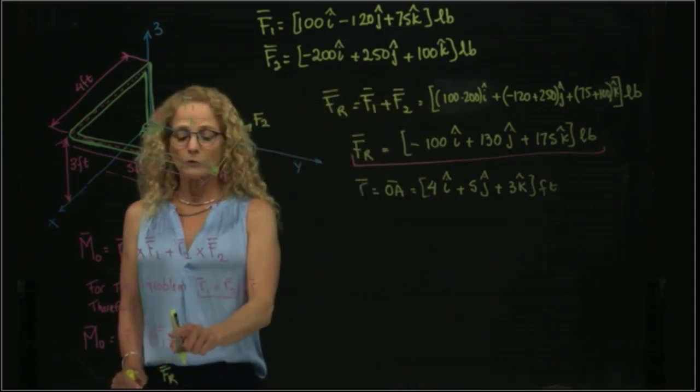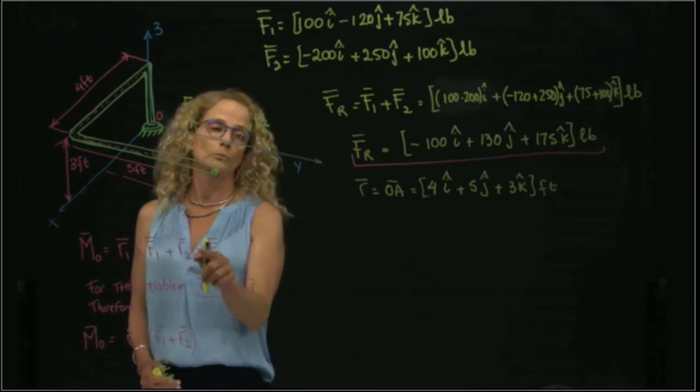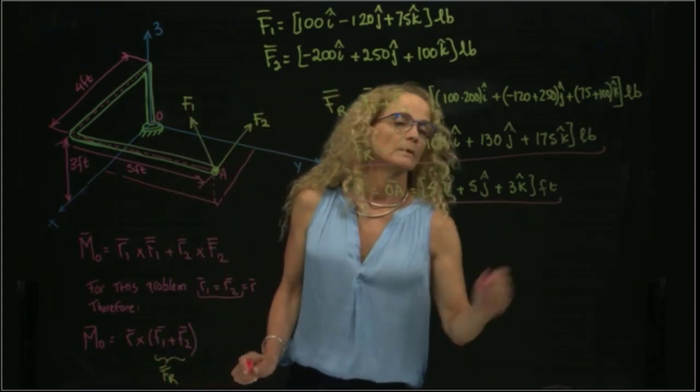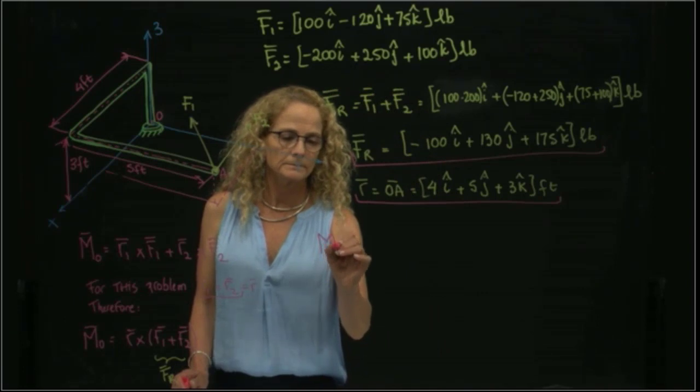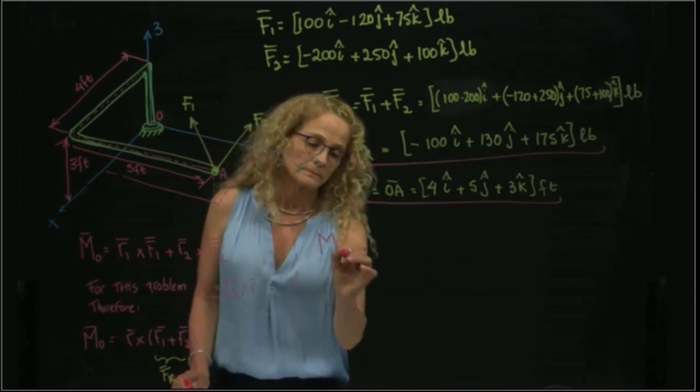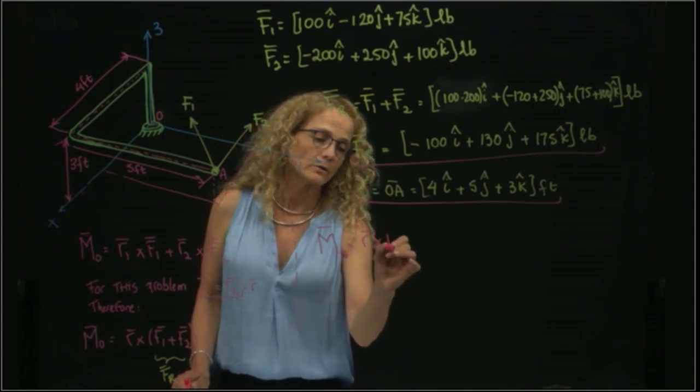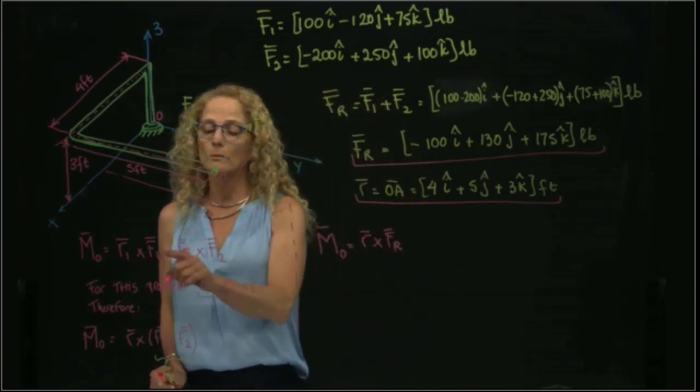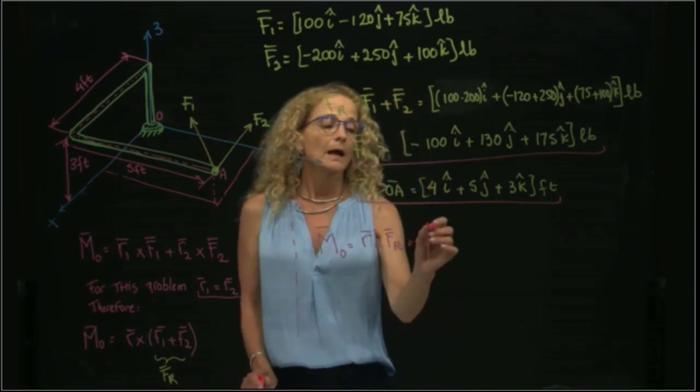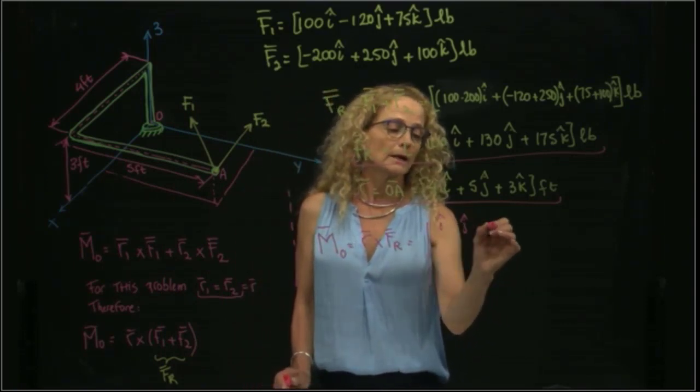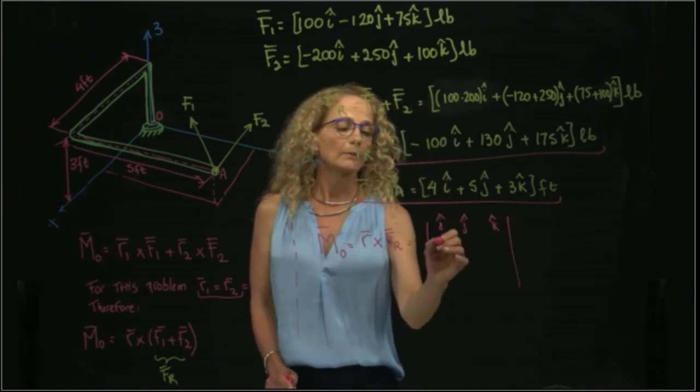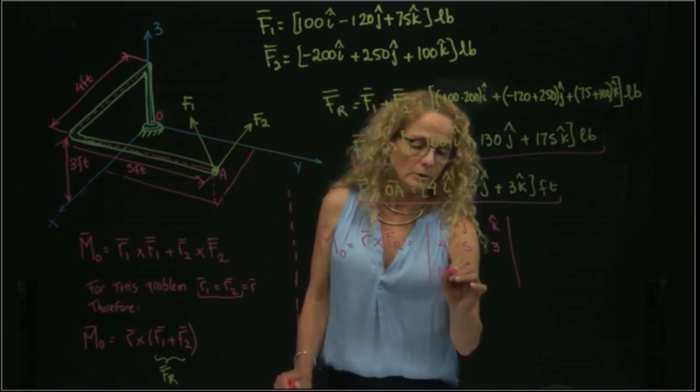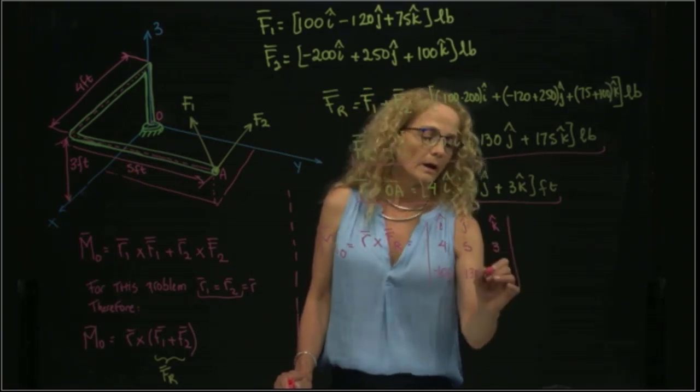Now that I have both vectors, I can apply my cross product. My cross product will be a vector, which is R cross the resultant force. This is only because R is common for the two of them. That will be I, J, K; my R will be 4, 5, 3; and my vector will be minus 100, 130, and 175.